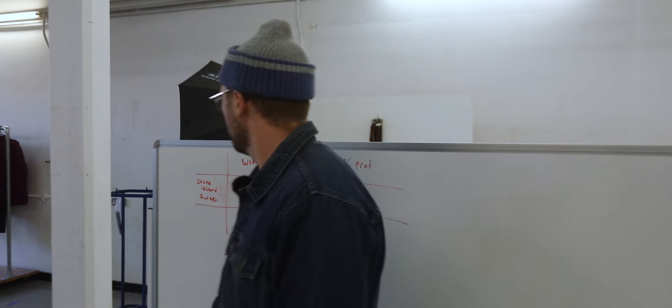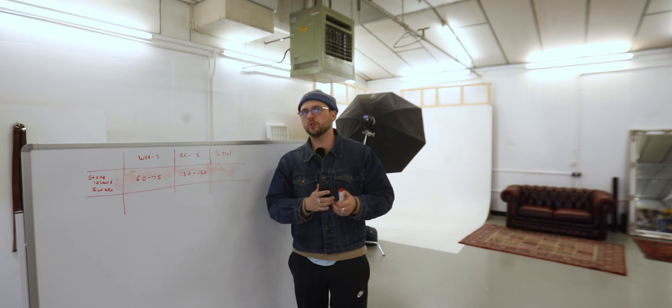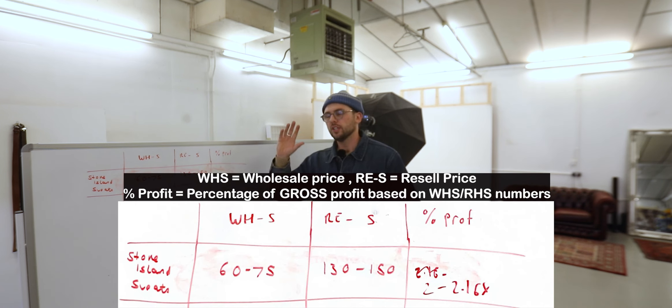I'm going to put the picture right here on the board so that we can see it at the same time whilst I'm working out the calculator of this. I'm going to use the example of Stone Island sweatshirt.